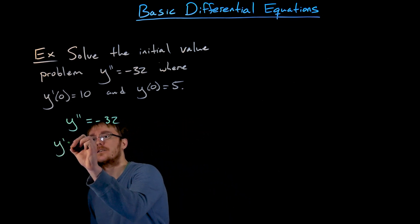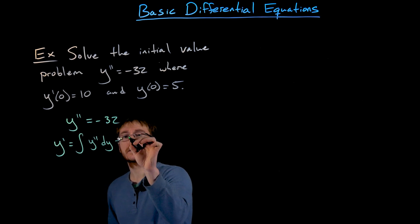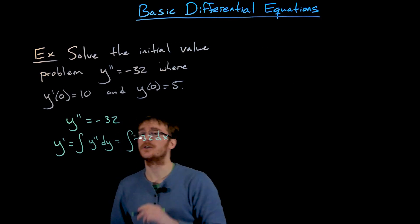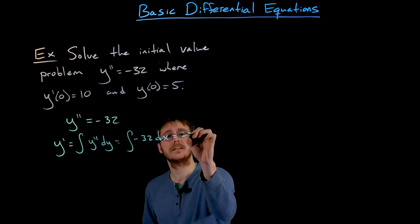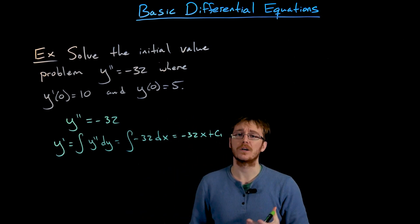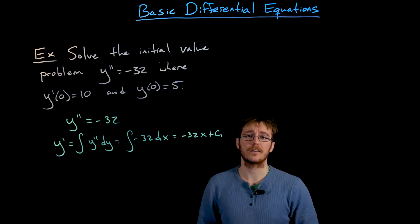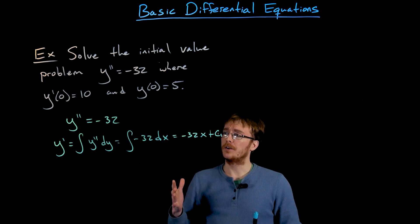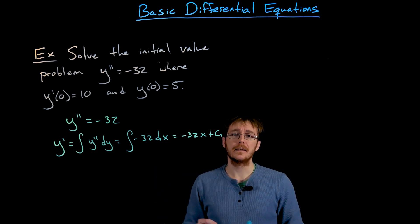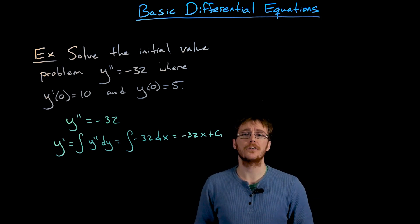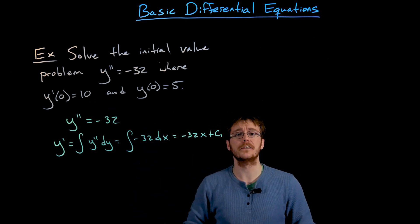The idea is to go from y double prime to y prime by integrating y double prime, which gives us the integral of negative 32. The antiderivative of negative 32 with respect to x is negative 32x plus some constant we'll call c1 — not just c, because multiple constants will show up in our process. So if the second derivative of this unknown function is negative 32, the first derivative should look like negative 32 times x plus some unknown constant c1.